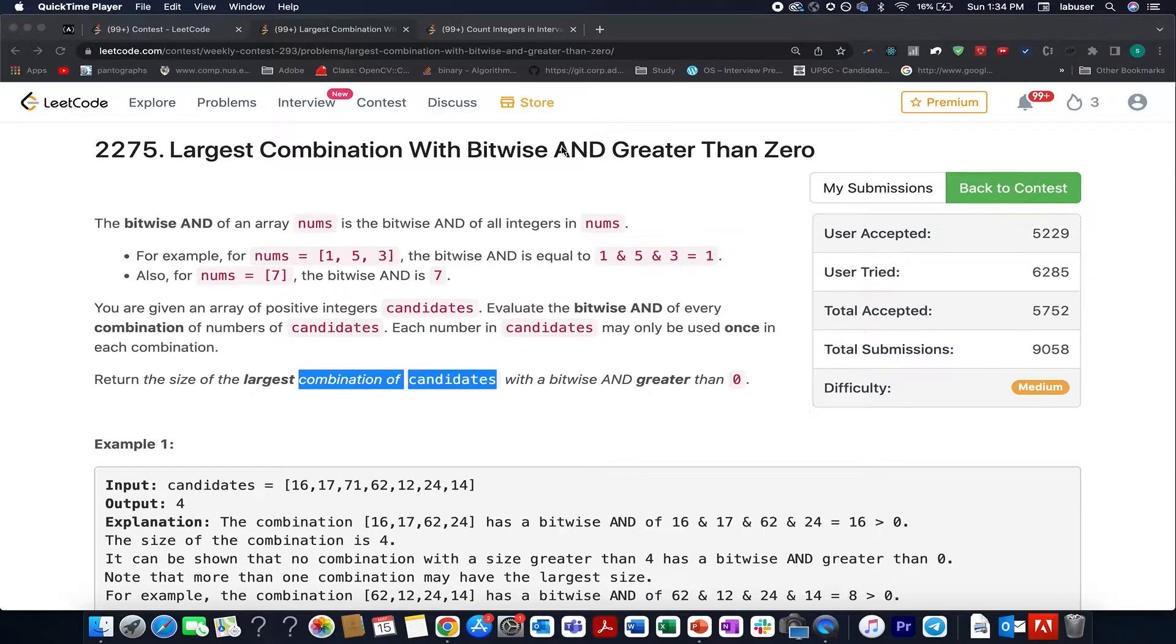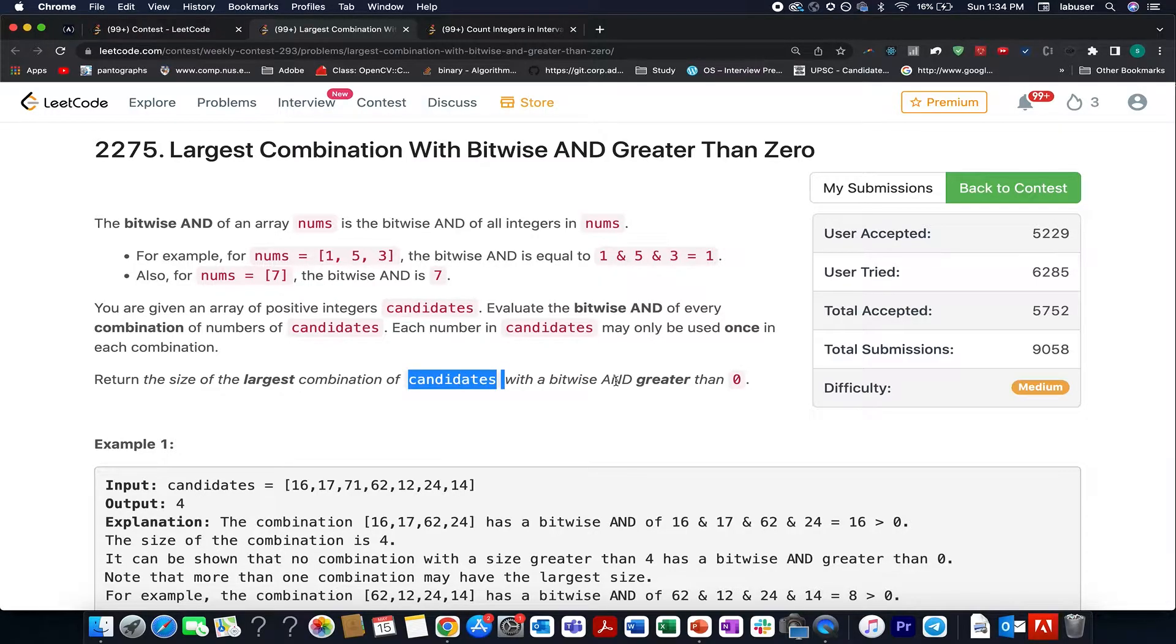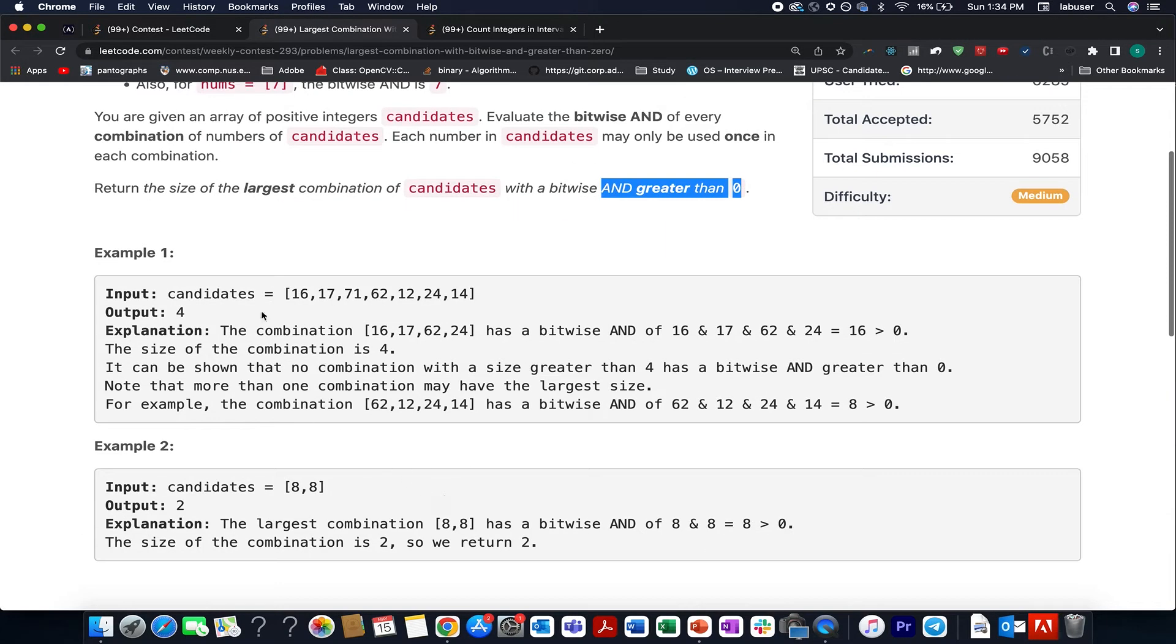And here I present weekly contest 293 largest combination with bitwise AND greater than zero. Here in this question, we are given an array of integers and we need to identify the largest combination of candidates with bitwise AND greater than zero. So here in this question, we have provided an array and for this particular example, the output turns out to be four. How? Let's walk through the presentation where I'll be explaining you the algorithm as well as driving you through this test case.